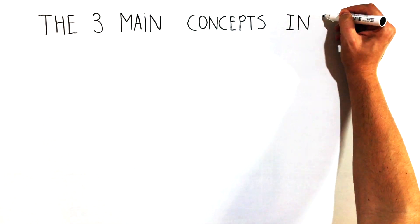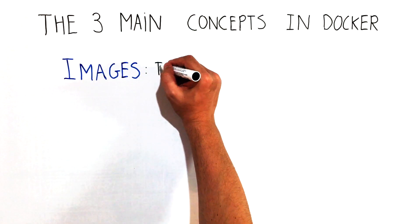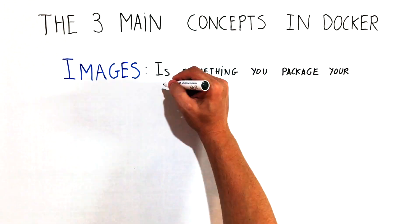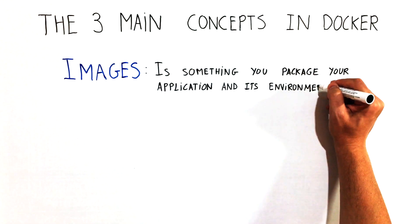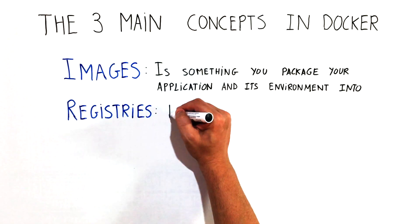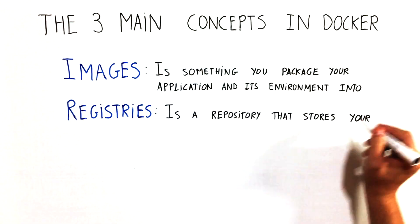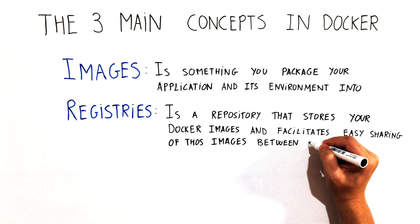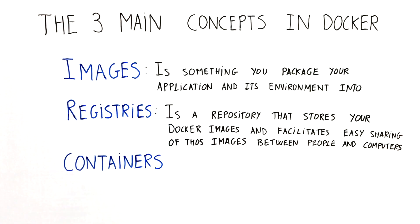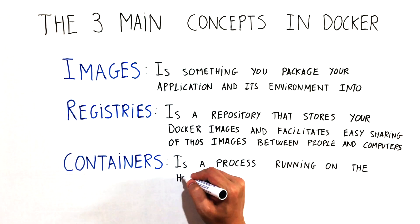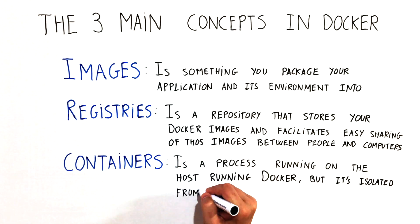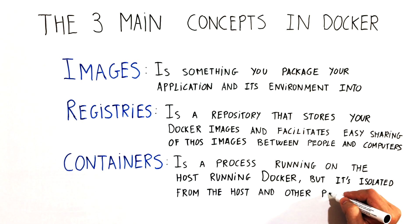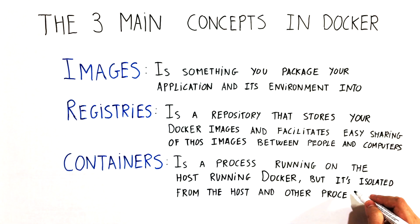The three main concepts you need to understand well in Docker are images, registries, and containers. There are many more topics and concepts related to Docker, but first things first. The key to learning how to use Docker is to well understand what images, registries, and containers are and what they are used for. Once you get familiar with those concepts and the basic commands of Docker, you will be ready to start learning Kubernetes.